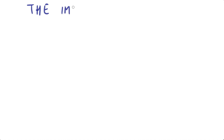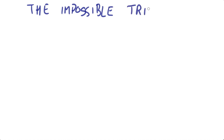One of the key concepts that needs to be understood in order to understand monetary union is the Mundell-Fleming Trilemma, also called the Impossible Trinity. That's what we are going to see right now.